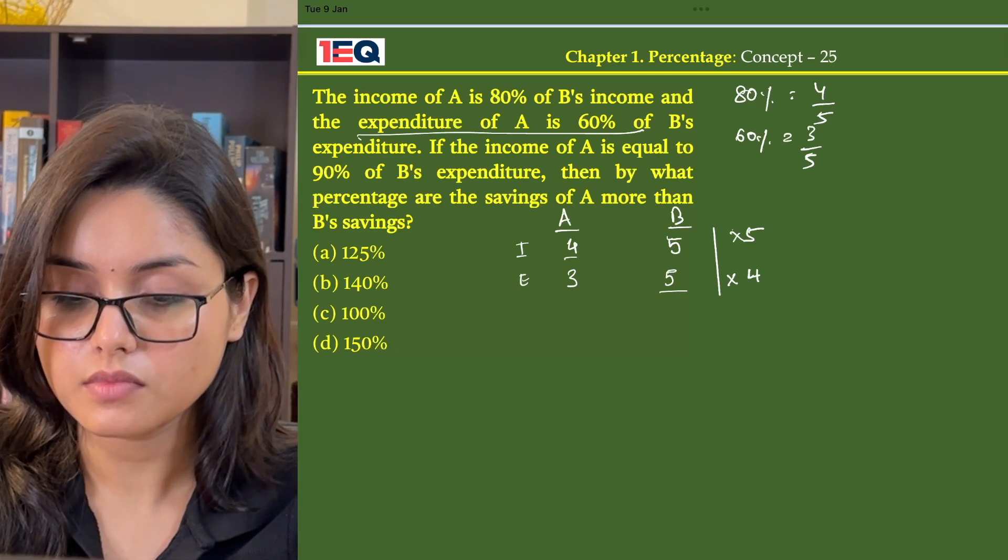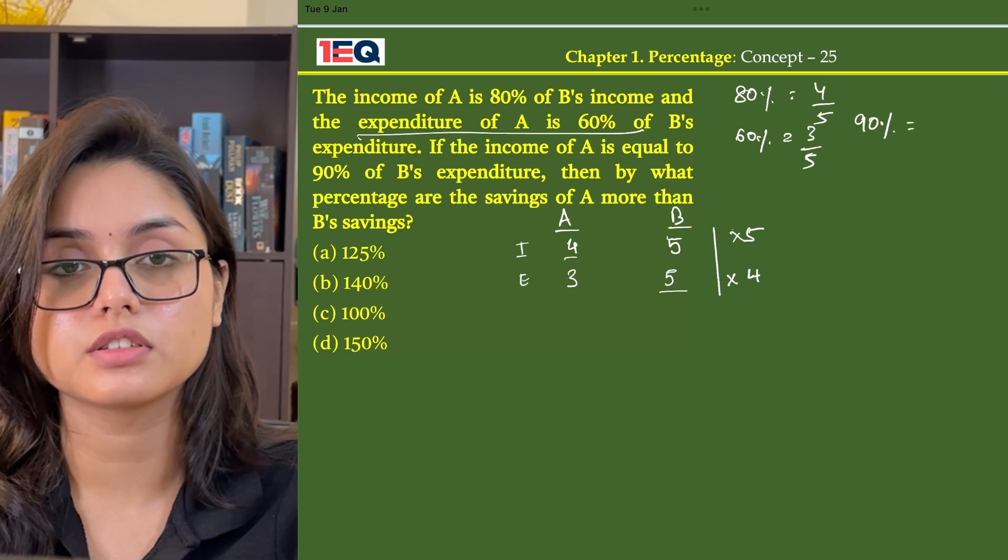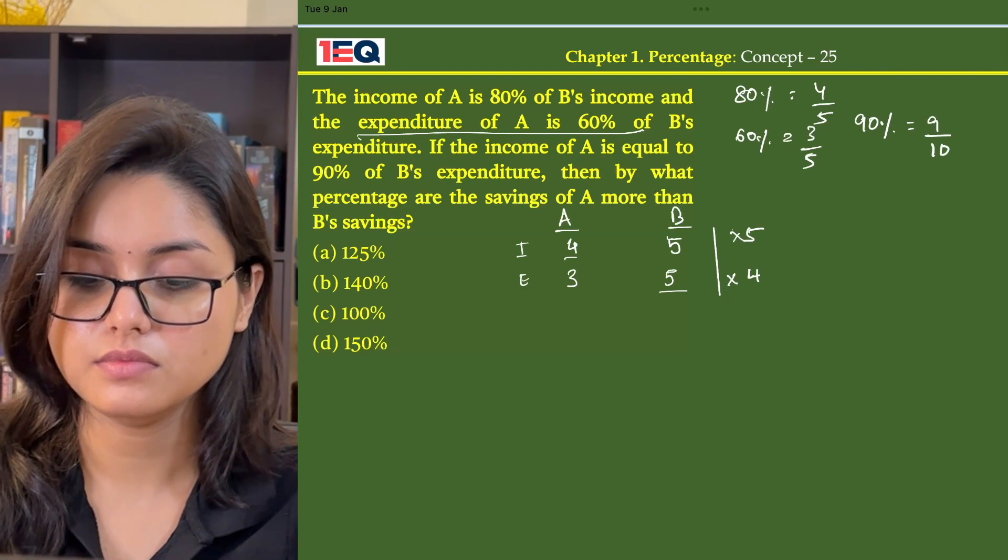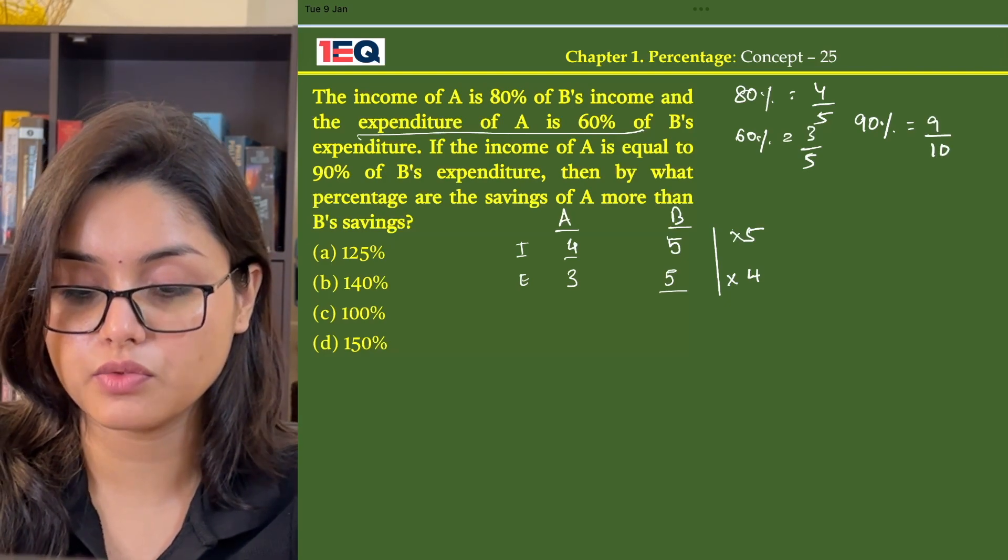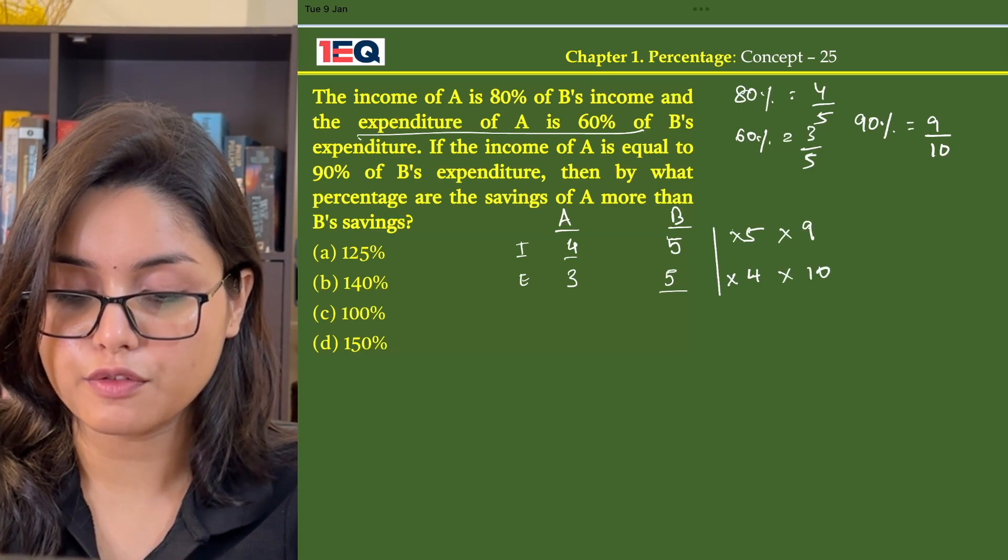The income of A is 90% of B's expenditure, which means 90% equals 9 by 10. To make it 90%, we will multiply the income with 9 and expenditure with 10.